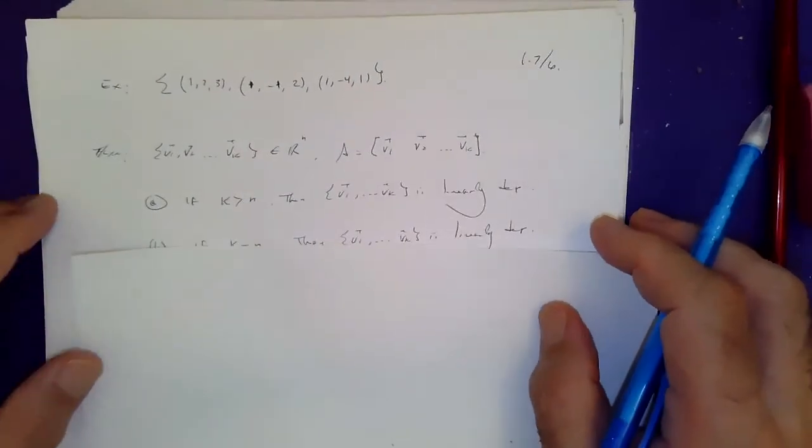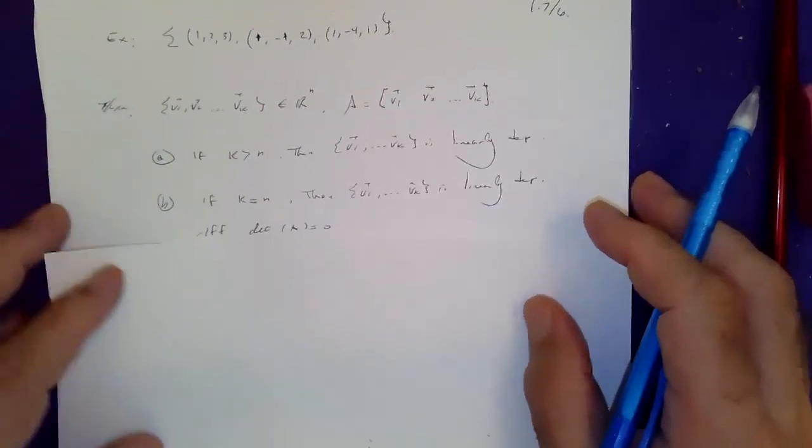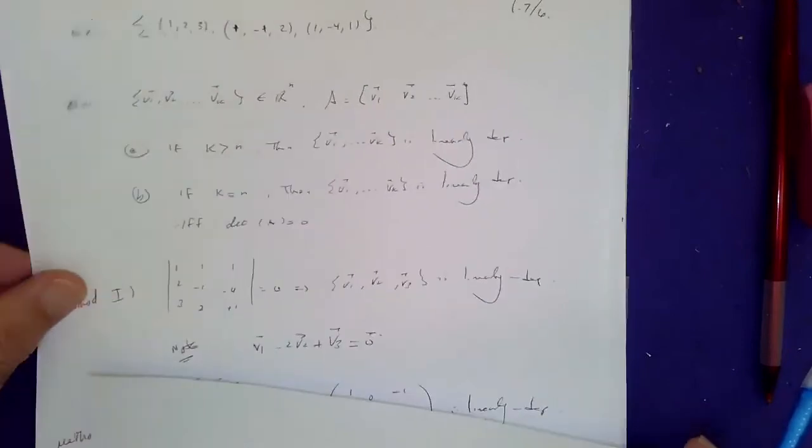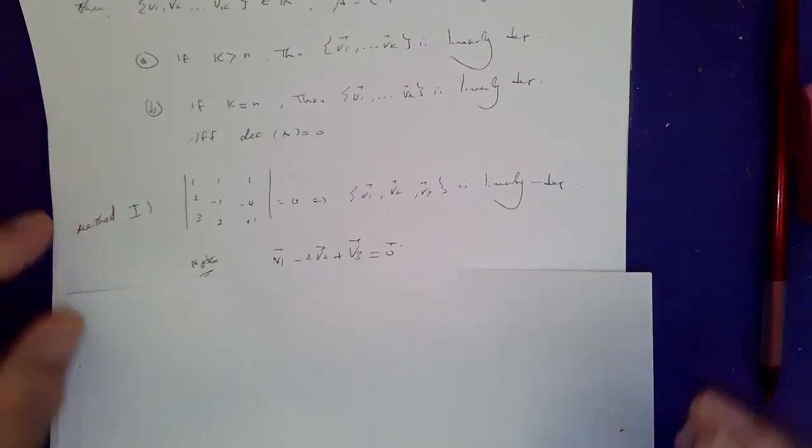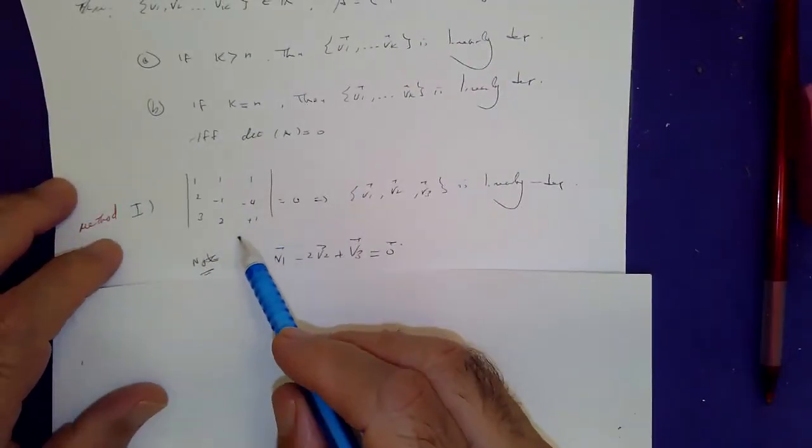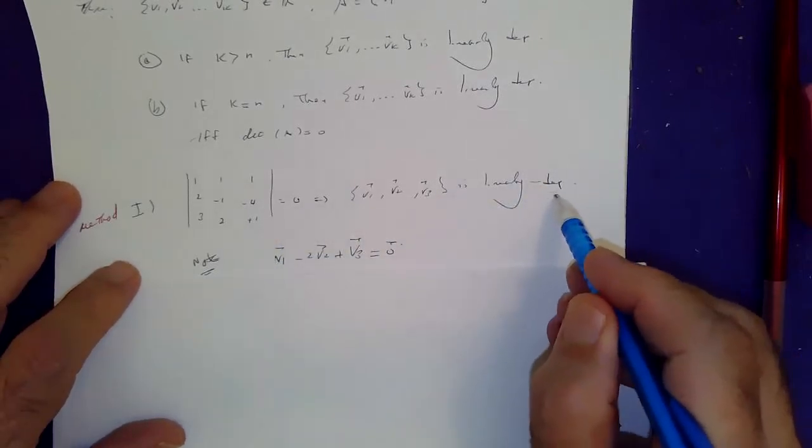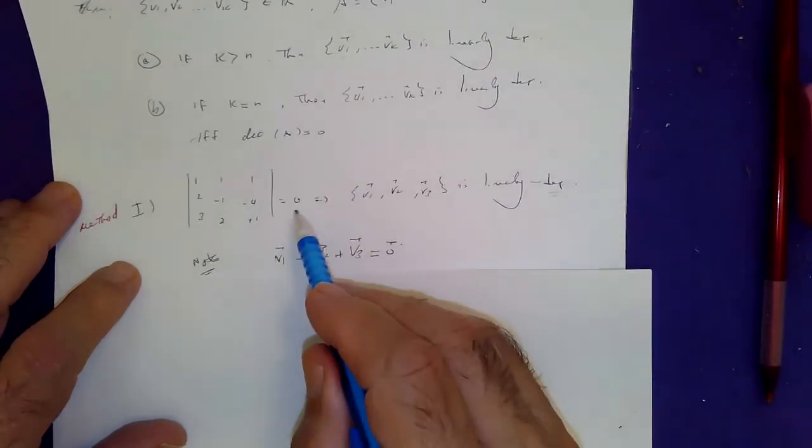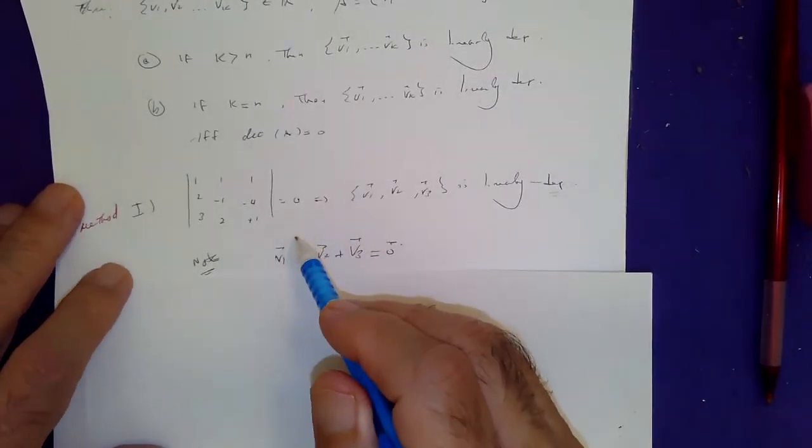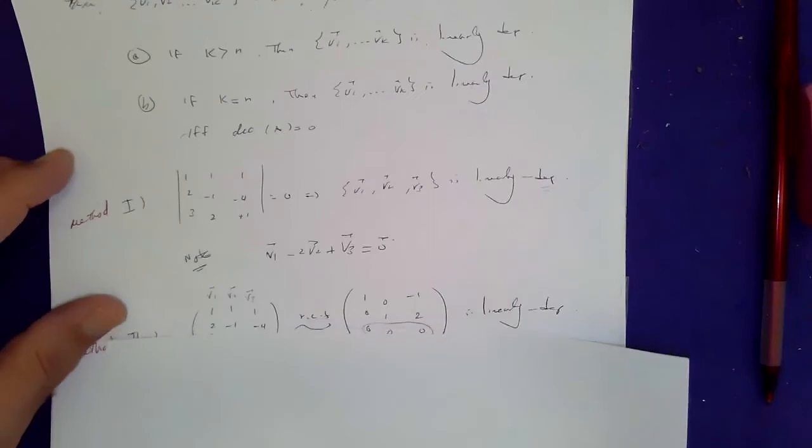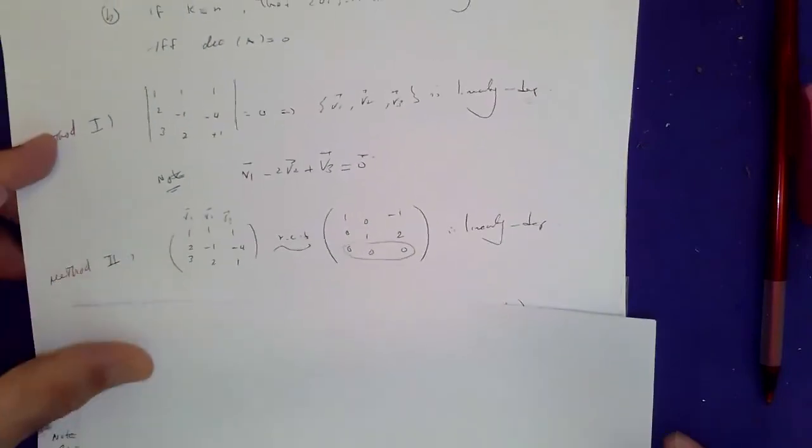I think that's a fascinating way of doing it. Later on, when we learn about determinants, if the determinant of the vectors is zero, they're linearly dependent. If it's not zero, they're linearly independent. But this is coming up in the next section, so we don't know that. For now, we're just going to form this special matrix.